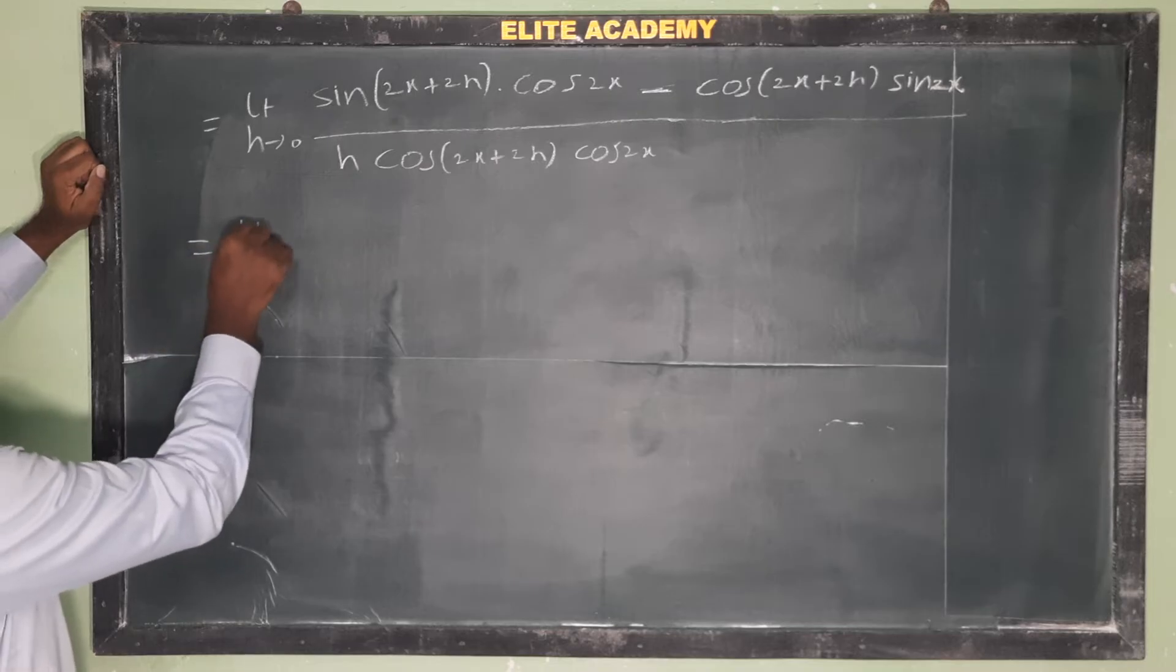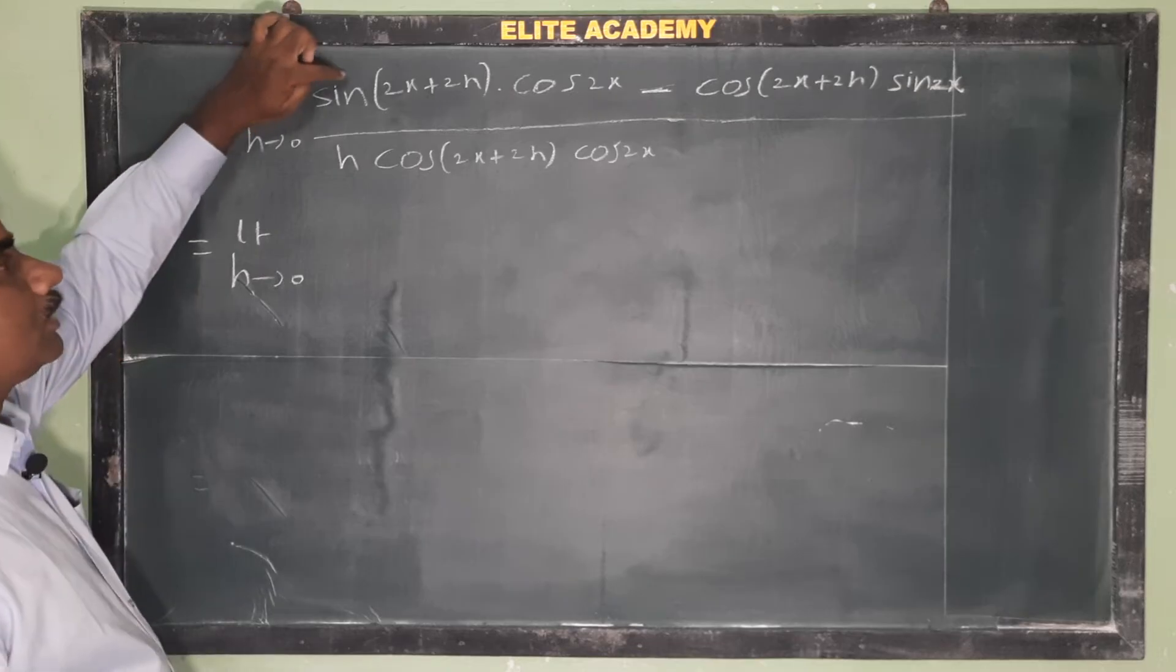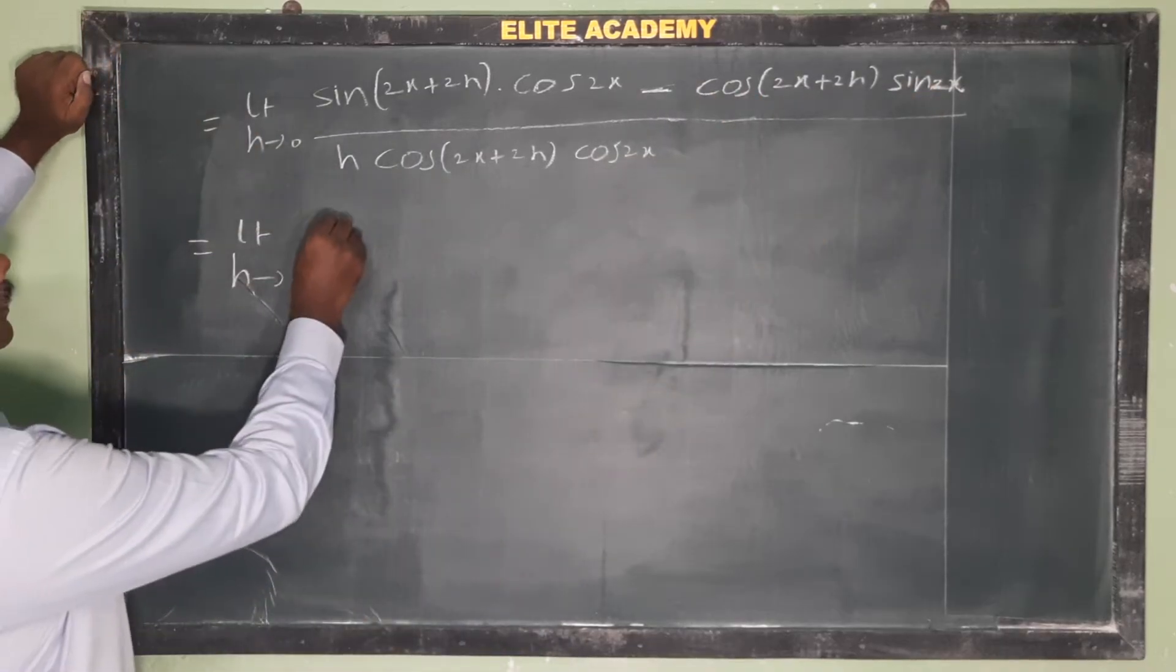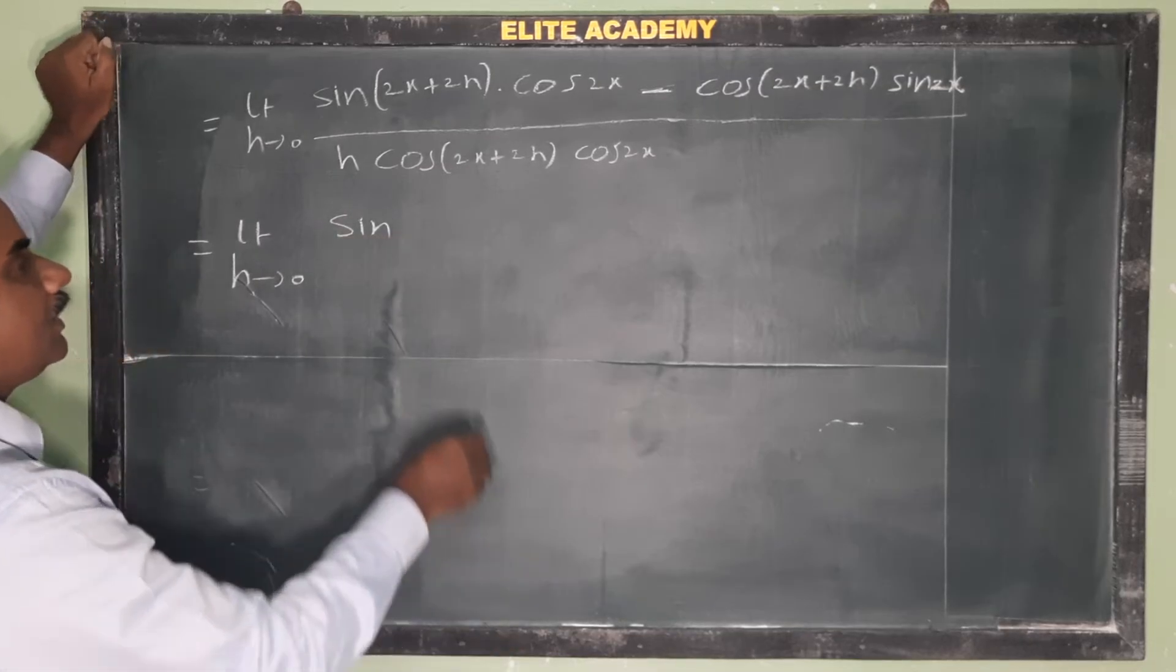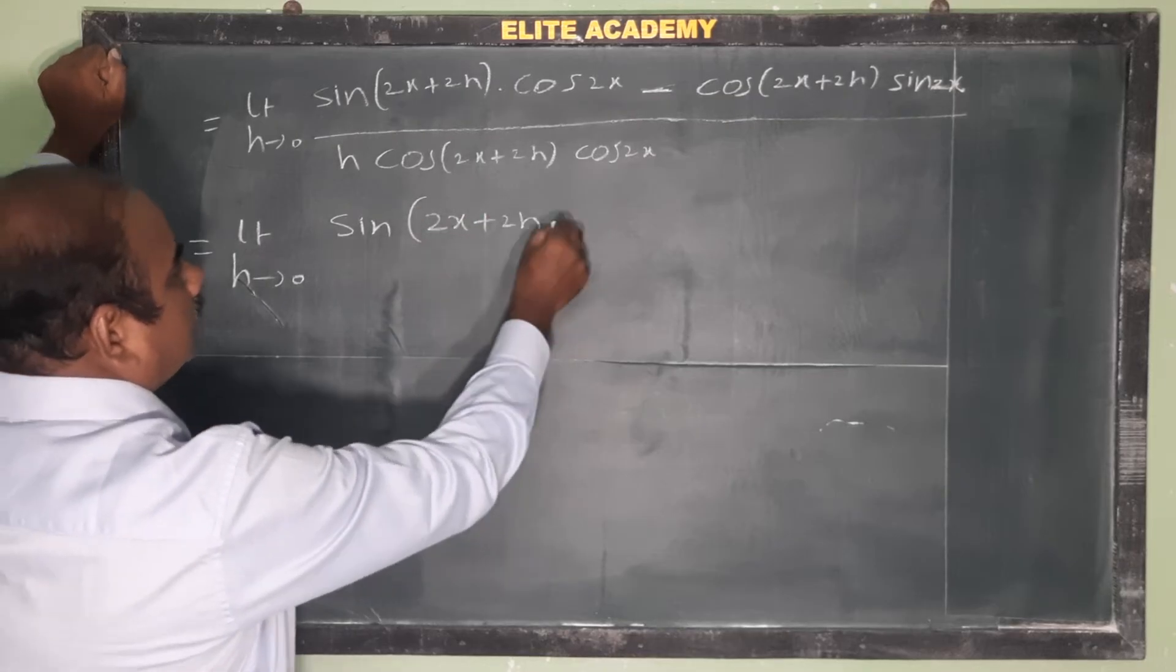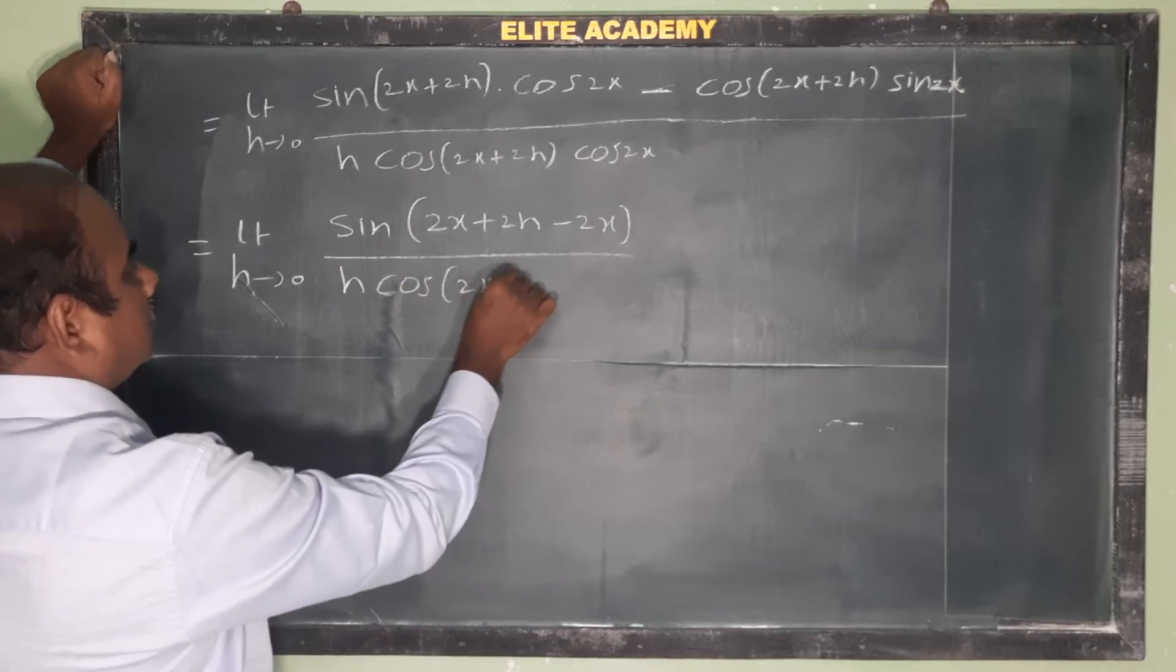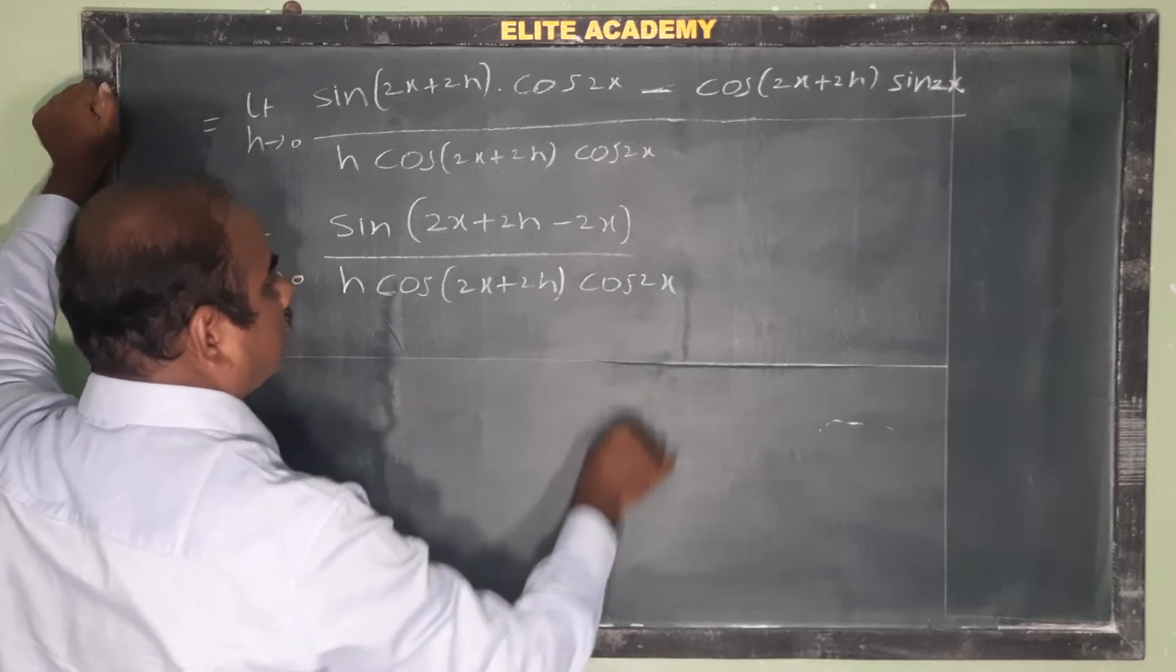Now let us see, this limit h tends to 0, in the numerator we have sin a cos b minus cos a sin b. So sin a cos b minus cos a sin b means sin(a minus b) formula, where a is 2x plus 2h and b is 2x, divided by h cos(2x plus 2h) into cos 2x.